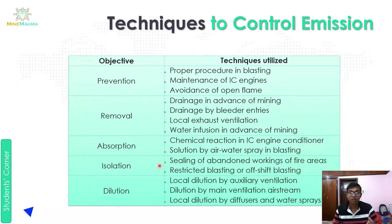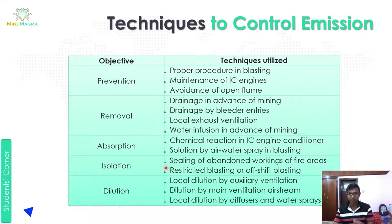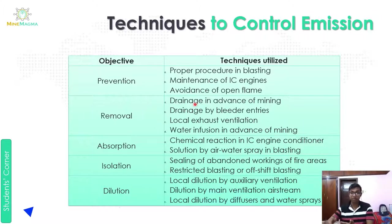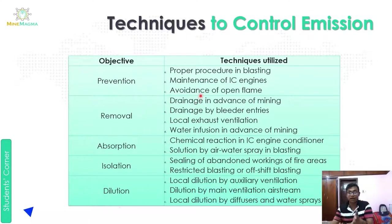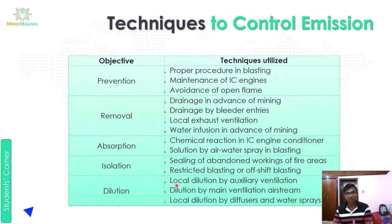Fourth objective is isolation. First is sealing of abandoned workings or fire areas — we seal those areas so that gas does not escape from there. Second is restrictive blasting or off-shift blasting — we restrict blasting to times when people are not working, so we can isolate them from the hazard. Fifth and last objective is dilution: local dilution by auxiliary ventilation, dilution by main ventilation air stream, or local dilution by diffuser and water spray. These are our five objectives and their associated techniques.